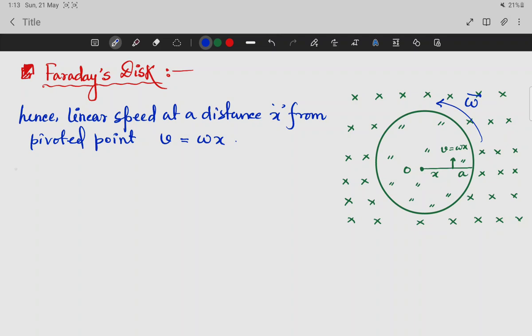Therefore force experienced by the disk. What is force? Magnetic force Fm is equal to minus e into v cross B. This is the electron.